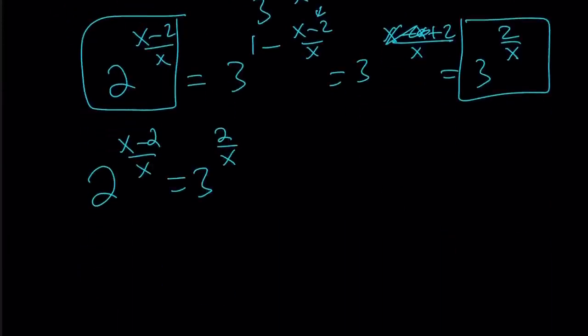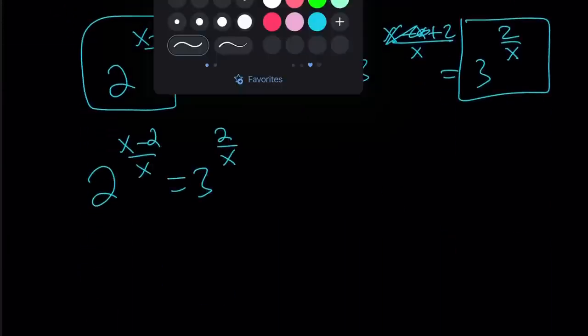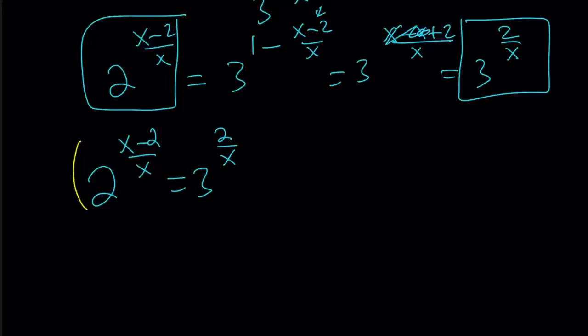Now, we have this equation, so we can go ahead and raise both sides to the power x to get rid of the 1 over x. So this cancels out. This cancels out. We end up with the following.